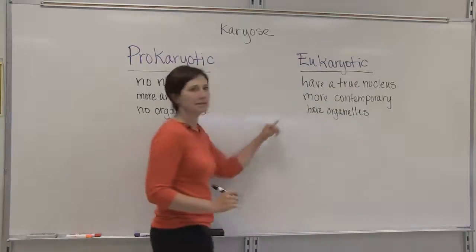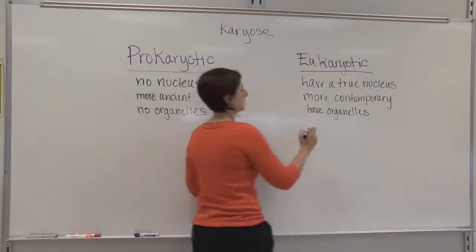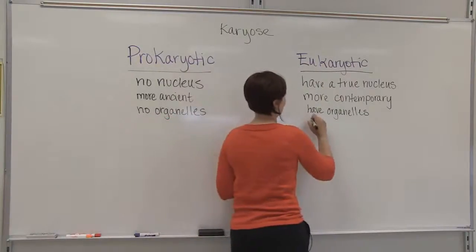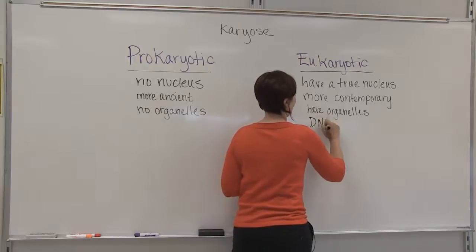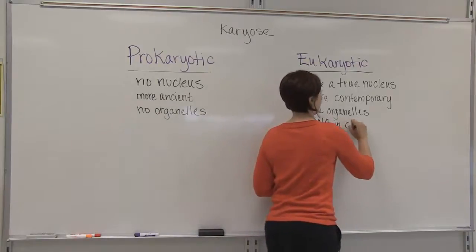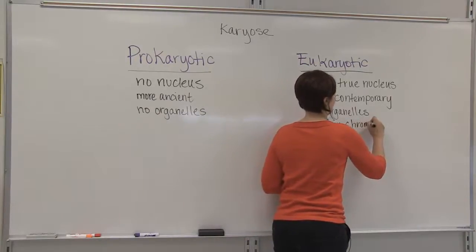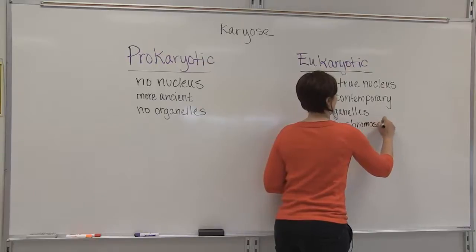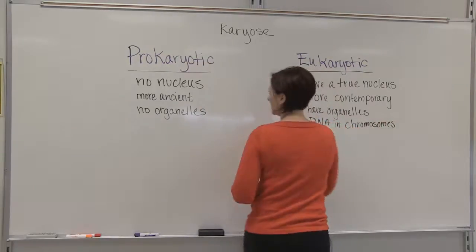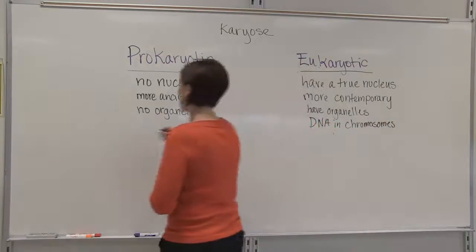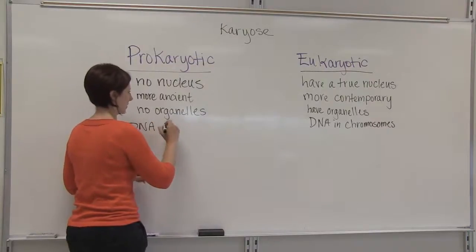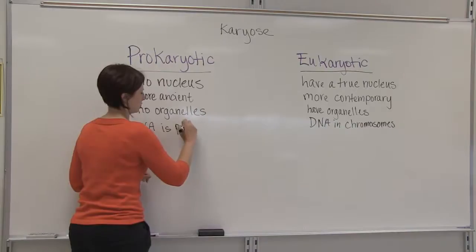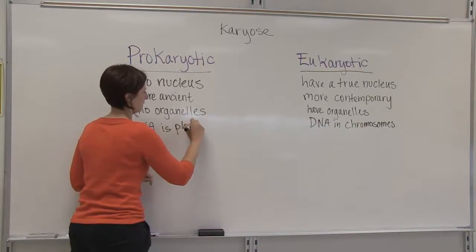The DNA in eukaryotic cells is organized into chromosomes, whereas the DNA in prokaryotic cells is organized into a plasmid, which is a circular piece of DNA.